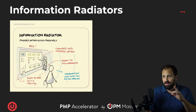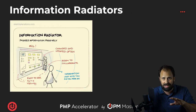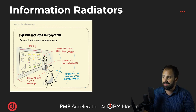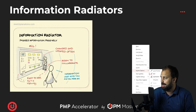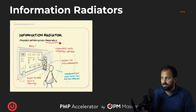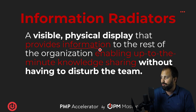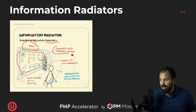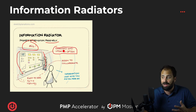Let me show you a picture. This is from sketchplanations.com — cool dude put this little picture out. It says information radiators share information passively. What that means is it's always there, provides information at any time, up to the minute, without having to disturb anybody. It's big, it's on the wall, it's a ginormous computer screen — changing and updated often, so it's up to the minute.